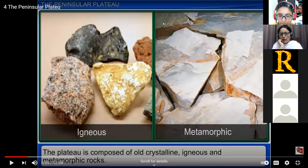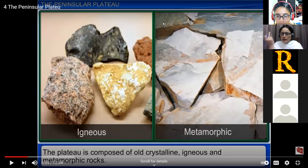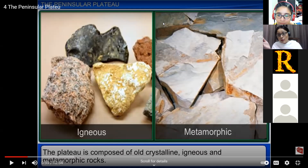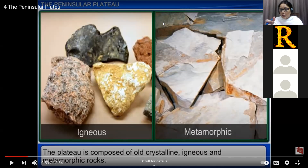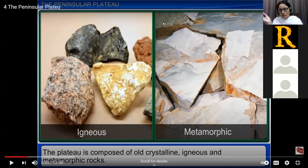Igneous rocks form when lava comes out from deep within the Earth, contacts the atmosphere, cools down and becomes very solid. Metamorphic rocks form when igneous or sedimentary rocks are under great pressure and temperature changes for a long time period. Southern India is made up of these two types — igneous and metamorphic rocks.